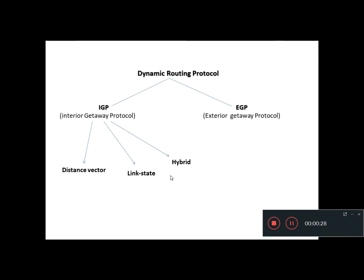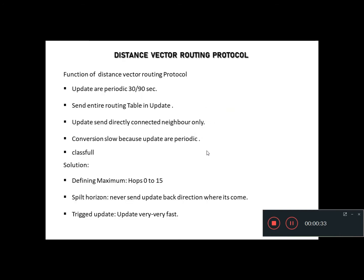We are learning about distance vector routing protocol. The functions of distance vector routing protocol are: updates are periodic, every 30 to 90 seconds; it sends the entire routing table in an update; updates are sent to directly connected neighbors only; convergence is slow because updates are periodic; and this is a classful update, meaning subnet mask information is not sent.